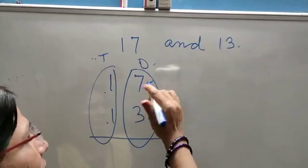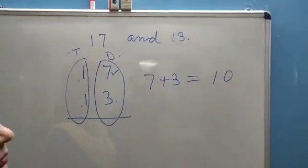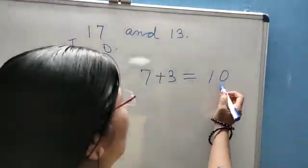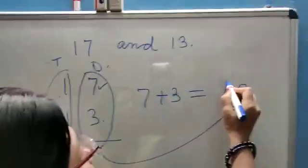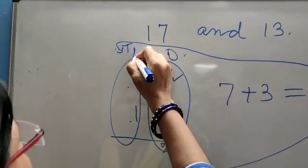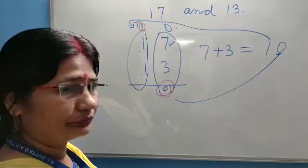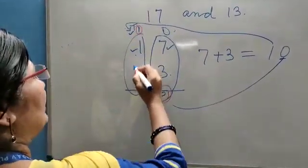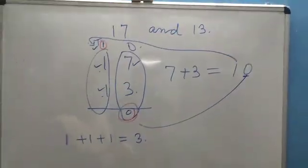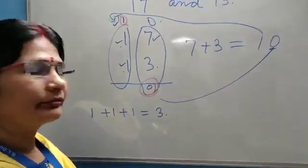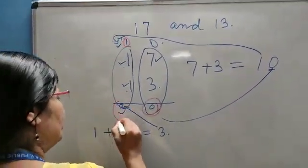Now these two numbers — that is seven plus three — seven plus three is equal to ten. Zero of ten will be placed at ones place, and one of ten will carry over to tens place. That will become one plus one plus one. One plus one plus one is equal to three. Three will come at tens place.